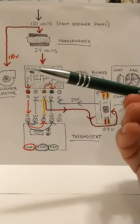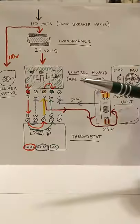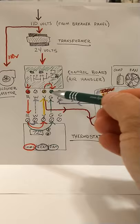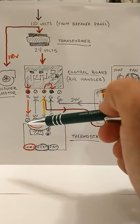If you really wanted to get funky and mess with people, you can take this red wire from the condensing unit, hook it up to, I don't know, let's say you hooked it up to your green wire.